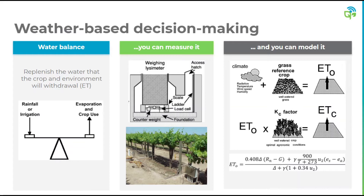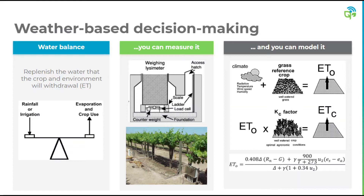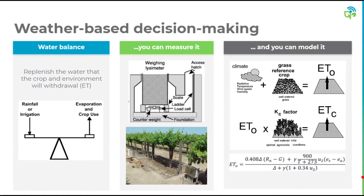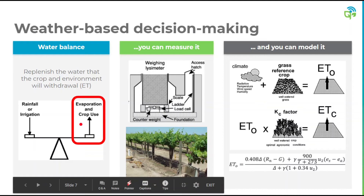The weather station will measure different climatic variables such as radiation, temperature, wind speed, humidity, and others. These variables are put into the Penman-Monteith equation that you see at the bottom of your screen here. This provides us with potential evapotranspiration or ETO. We then take this and multiply it by a specific crop factor or KC value, which provides us with evapotranspiration and crop use per day either in inches or millimeters.